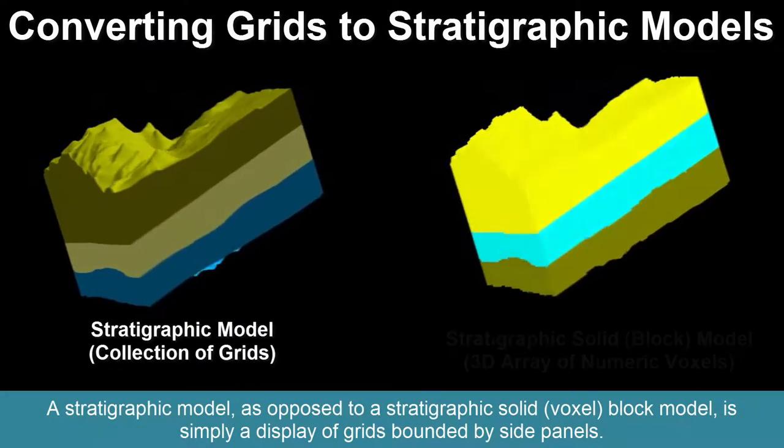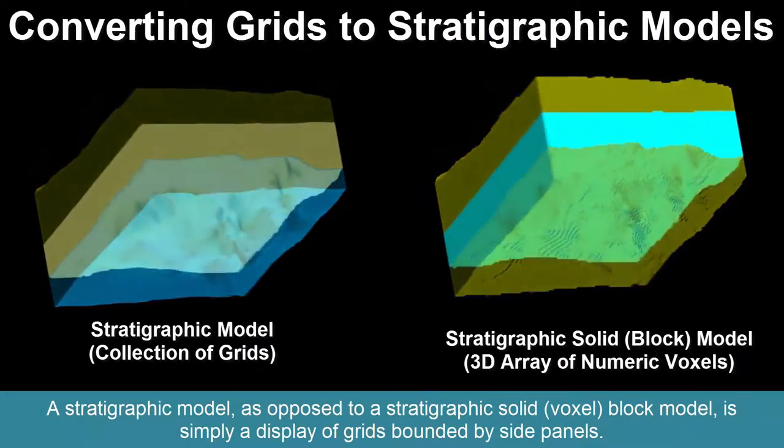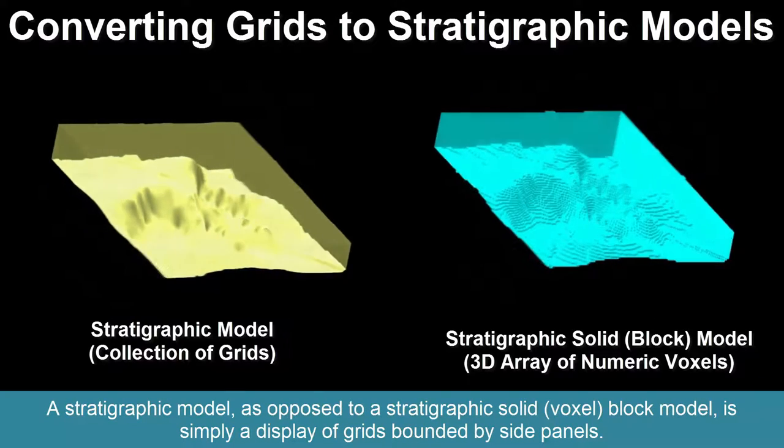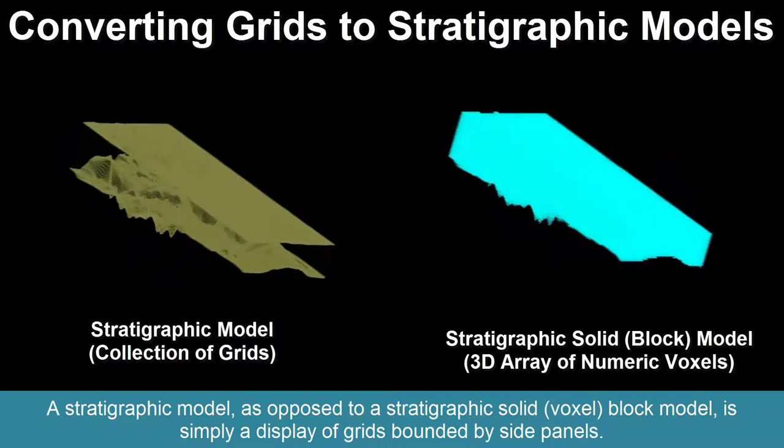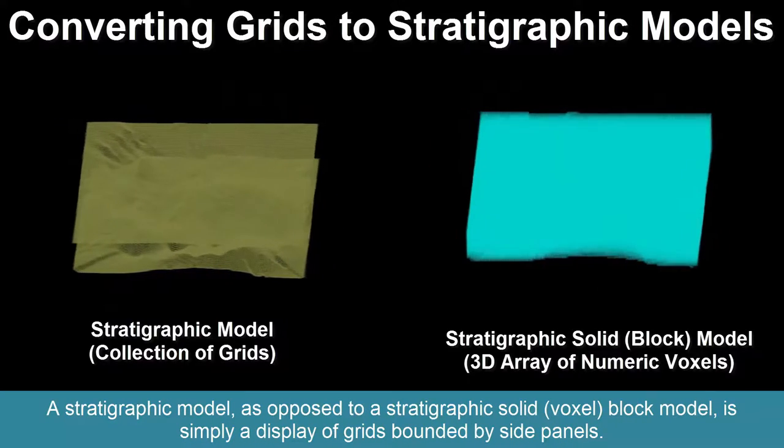A stratigraphic model, as opposed to a stratigraphic solid or voxel block model, is simply a display of grids bounded by side panels.